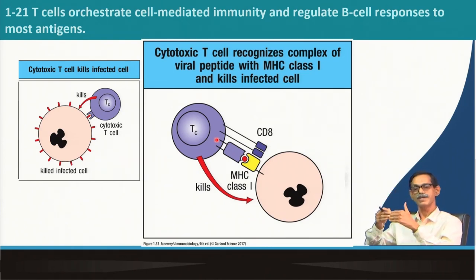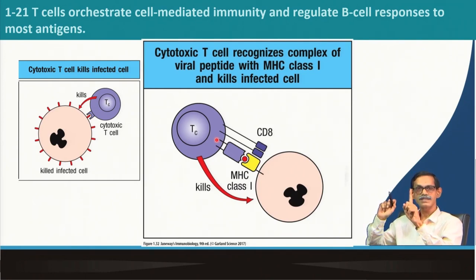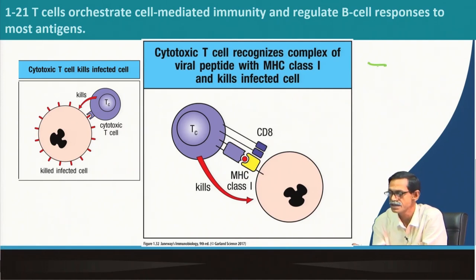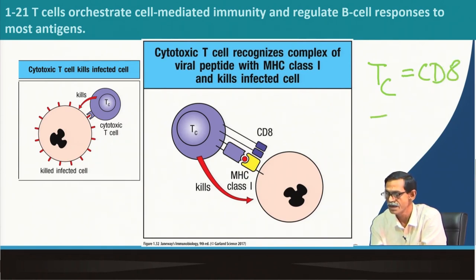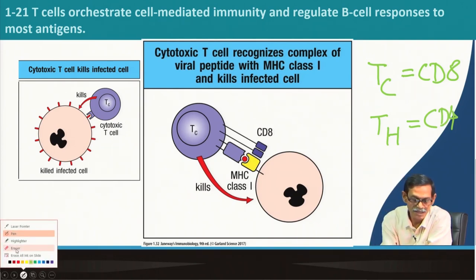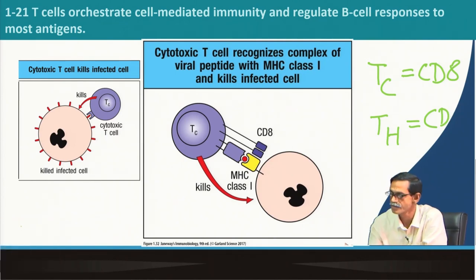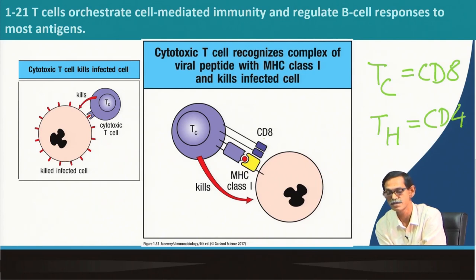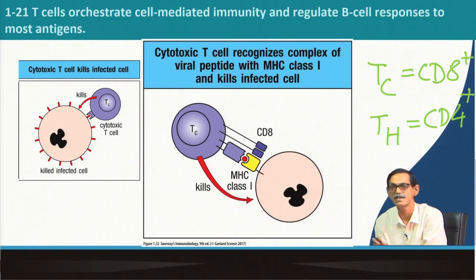To summarize: there are two types of T cells — cytotoxic T cells and helper T cells. Cytotoxic T cells express the co-receptor CD8, and helper T cells express the co-receptor CD4. That is why we often call cytotoxic T cells CD8+ cells, and T helper cells CD4+ cells.